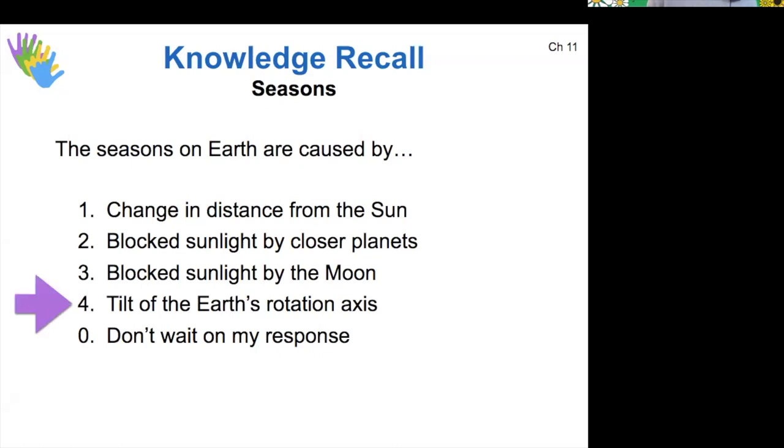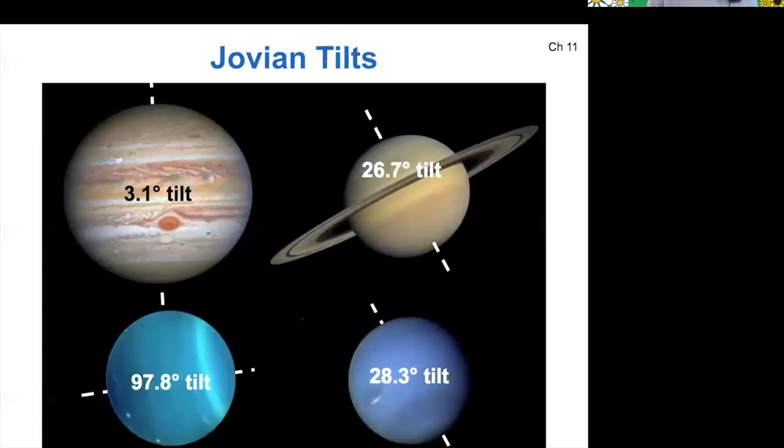So to explore Jovian seasons, what we want to explore is their axial tilts. Here are all of the gas giants with all of their different tilts. Jupiter has a 3.1 degree tilt, pretty small. Saturn 26.7, kind of similar to earth. Uranus, as we've seen in a homework before, is at 97.8 degrees. And then Neptune is at 28.3 degrees, again, kind of similar to Saturn.